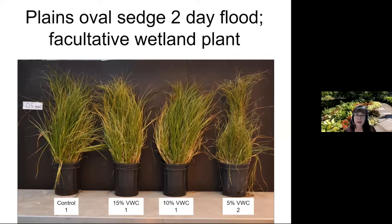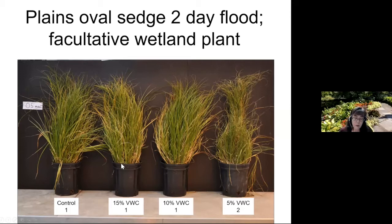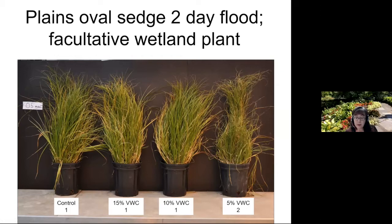Comparing that to a facultative wetland plant — plains oval sedge — which went through two days of flooding, the plants really did well under mild and moderate drought set points. Once we got to 5% volumetric water content, the plant is definitely more stressed and wilting, but it's not dying like palm sedge was under a similar treatment.